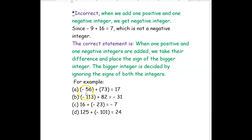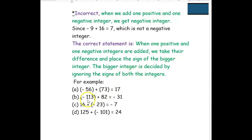For example, negative 56 plus positive 73: the biggest number is 73 and its sign is positive, so the result is positive. We subtract: 73 minus 56 gives 17. Similarly, negative 113 plus positive 82: the bigger integer is 113, its sign is negative, so we get negative, then 113 minus 82 gives 31 — result is negative 31.